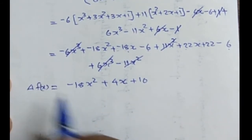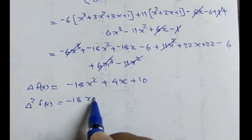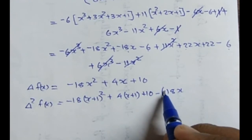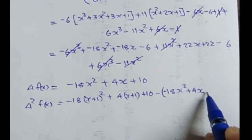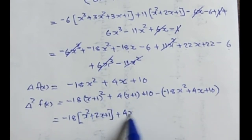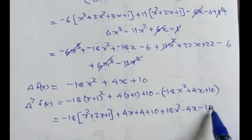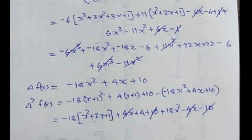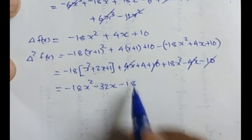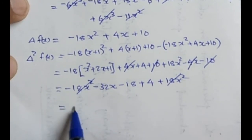Taking the second forward difference, delta² f(x) = [-18(x+1)² + 4(x+1) + 10] - [-18x² + 4x + 10]. Expanding: -18(x² + 2x + 1) + 4x + 4 + 10 + 18x² - 4x - 10. The constant 10 cancels, 4x and -4x cancel, and 18x² terms cancel. What remains is -36x - 14.